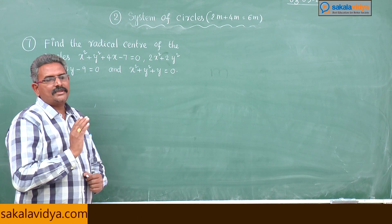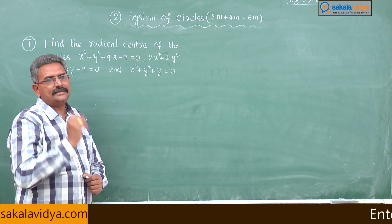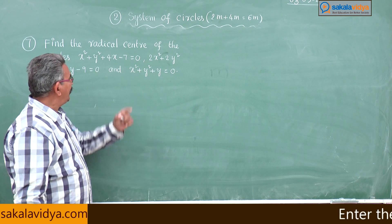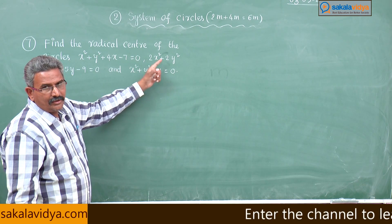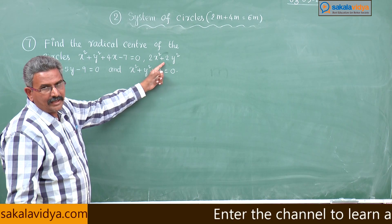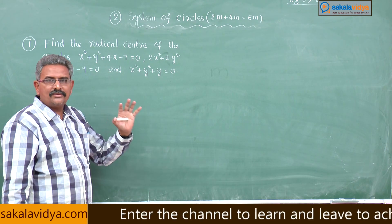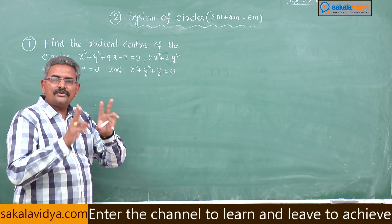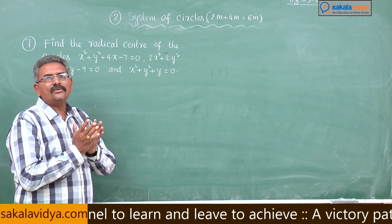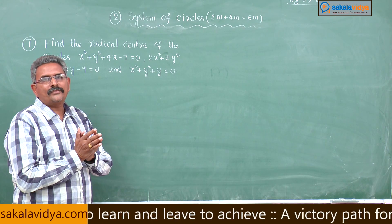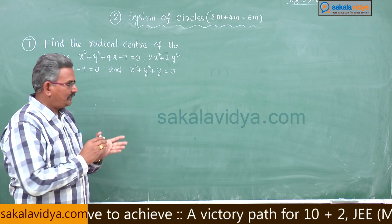First, how to find out Radical Axes? S minus S' equals 0, and S' minus S'' equals 0 gives us 2 Radical Axes, then we have to solve them. Shall we proceed? Let us do this problem.